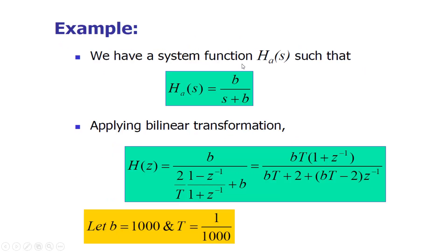Let's explain using an example. We are given an analog filter transfer function b/(s+b), and we have to transform it into a digital filter using the bilinear transformation. We apply the bilinear transformation by replacing s with (2/T) * (1 - z^(-1)) / (1 + z^(-1)), and after calculation we get the transfer function in the z domain.